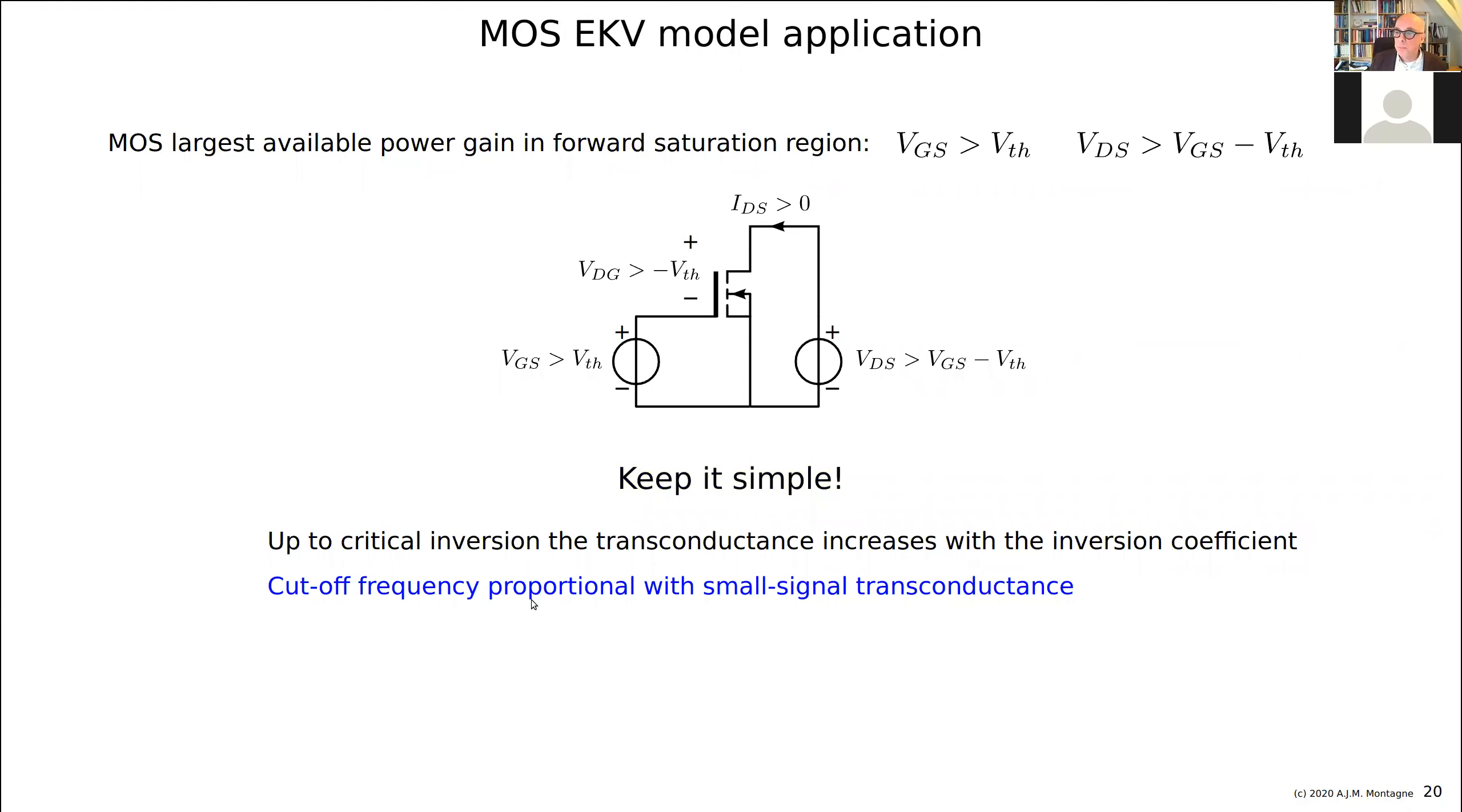The cutoff frequency is proportional with the small signal transconductance for a given transistor. So it means if you want to have a high FT, a high cutoff frequency, you have to go to a high inversion coefficient. But if you go higher than critical inversion, it doesn't give you much more. It will draw more current, but it doesn't give you much more FT. So it's not very efficient.